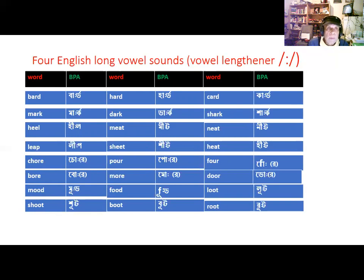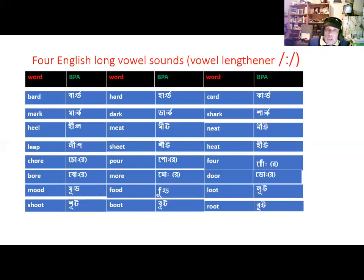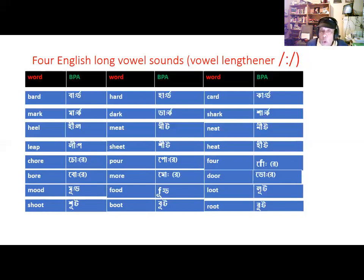These are the four English long vowel sounds. Let's read all the words again and notice how I lengthen the vowels. Bard, hard, card, mark, dark, shark. Heel, meet, neat, leap, sheet, heat. Chore, pour, four, bore, more, door. Mood, food — sorry, that was not foot — loot, shoot, boot, and root.